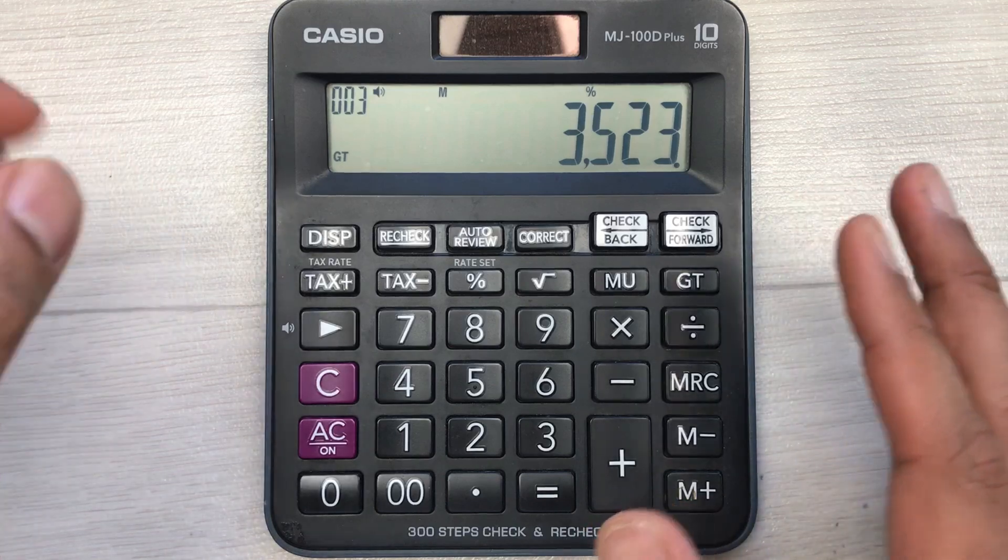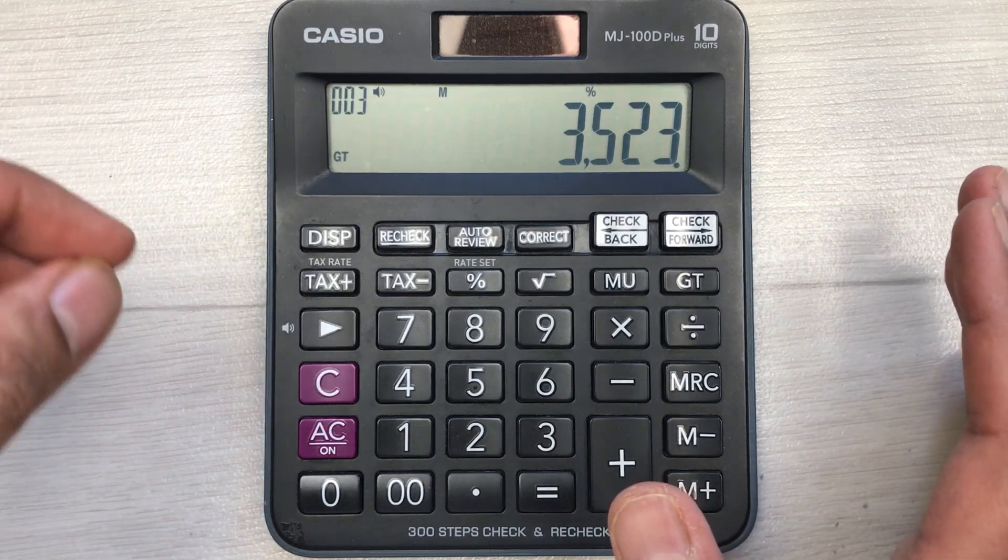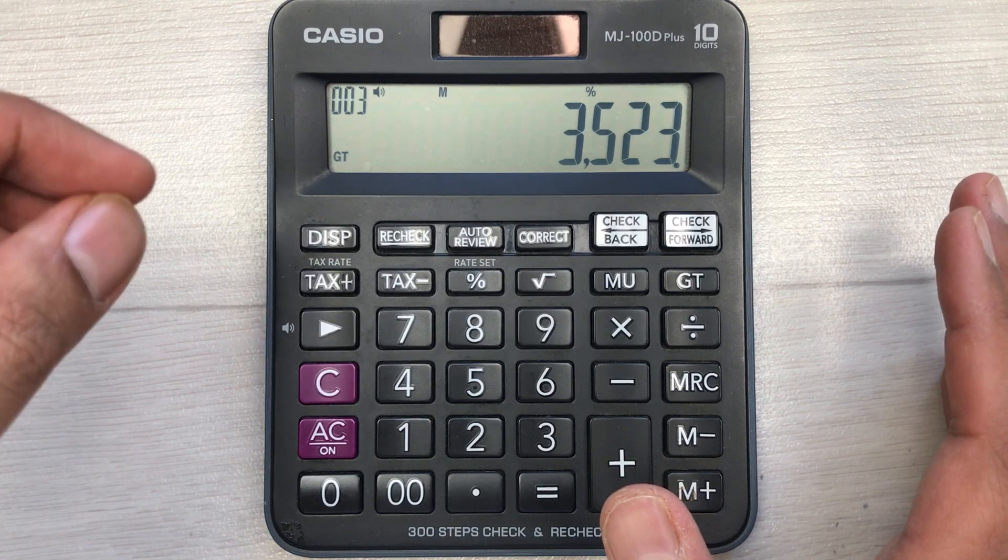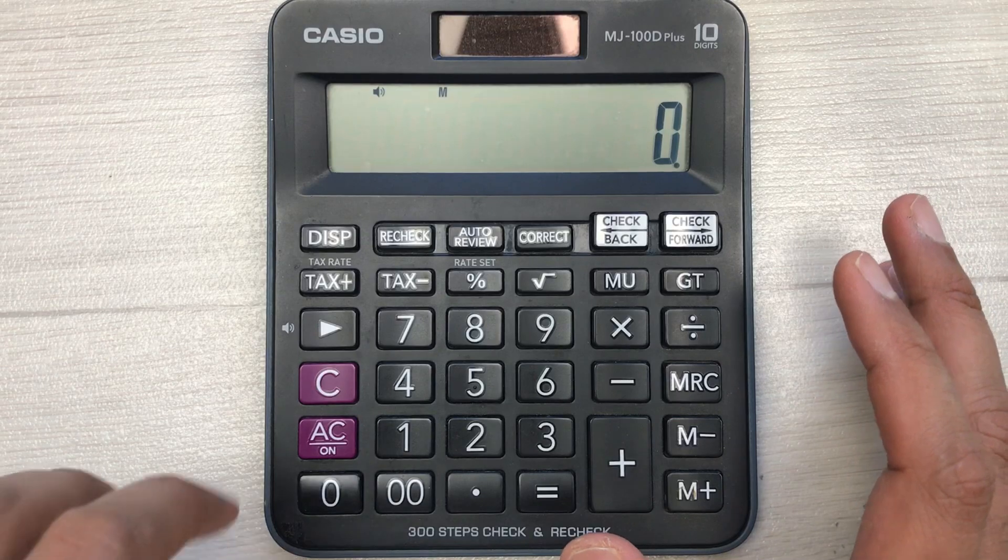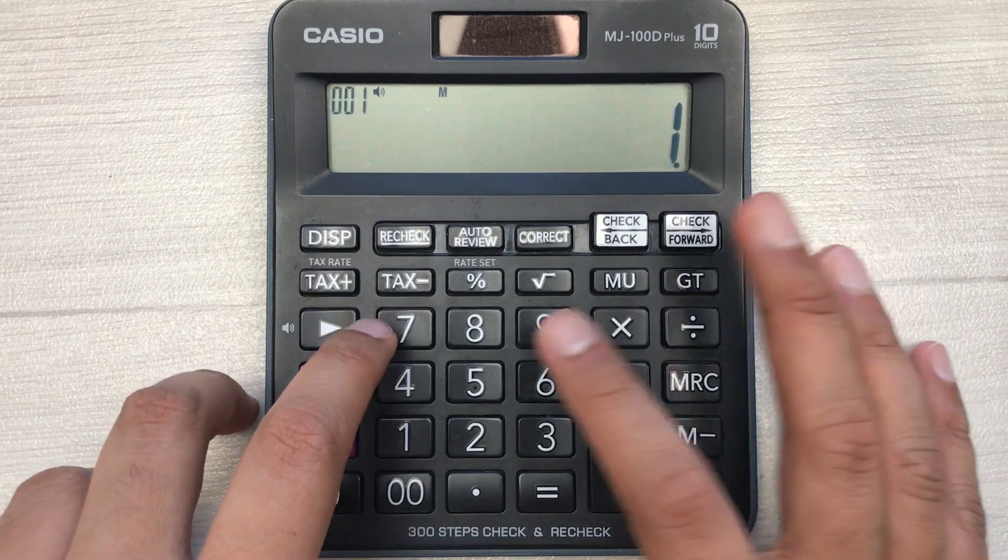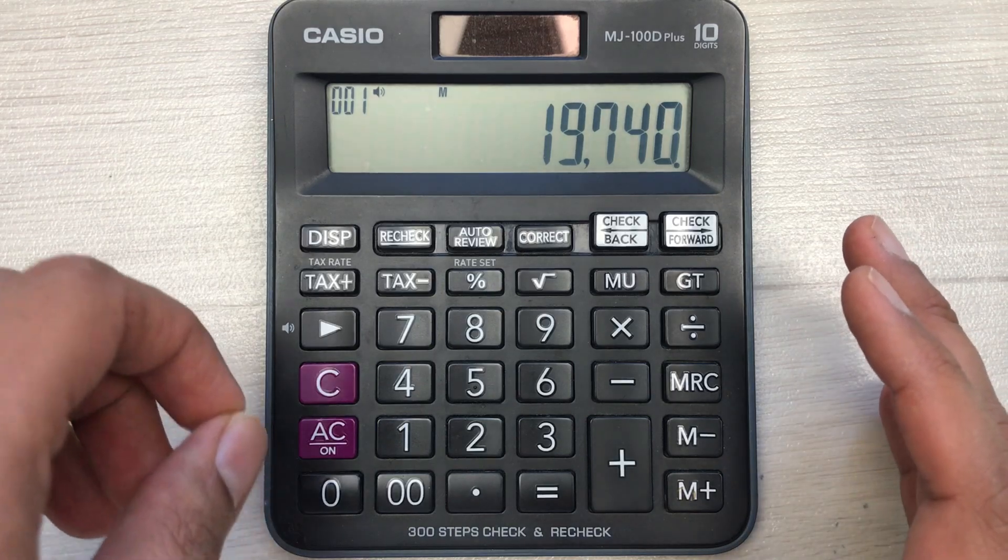Let's move to another example. Let's say you have an item and the price of that item is 19,740. Now you want to find out what will be the final amount after 35% discount.